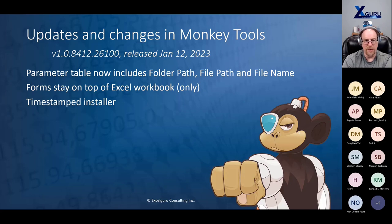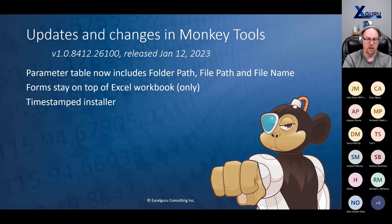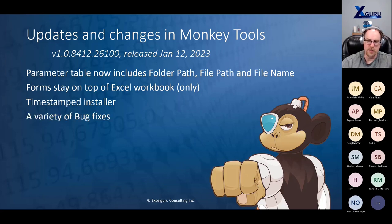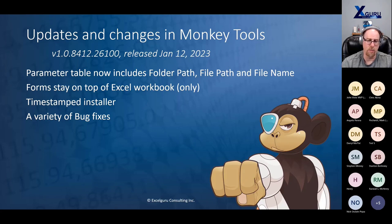I've also managed to add a timestamp to the installer and the digital certificate. What that means is that when the digital certificate expires, Monkey Tools will still show up on your ribbon — it doesn't just disappear, which means you won't have to uninstall and reinstall a new version. It also includes a variety of bug fixes. Thanks to everybody for reporting bugs — there's a nice feature in there where you can report them when you find them. I can't promise I've fixed everything reported, but I have fixed a bunch. Please use the Help or About menu to report bugs so I can get them nailed, because nobody likes bugs.